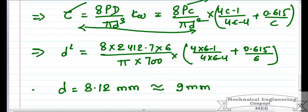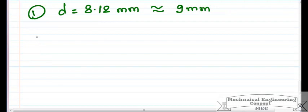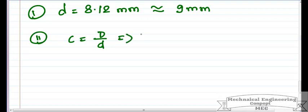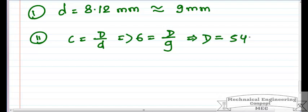To calculate the mean coil diameter, I use the spring index formula: C = D/d. C is 6 and d is calculated as 9 mm, so the mean coil diameter D = C × d = 6 × 9 = 54 mm.